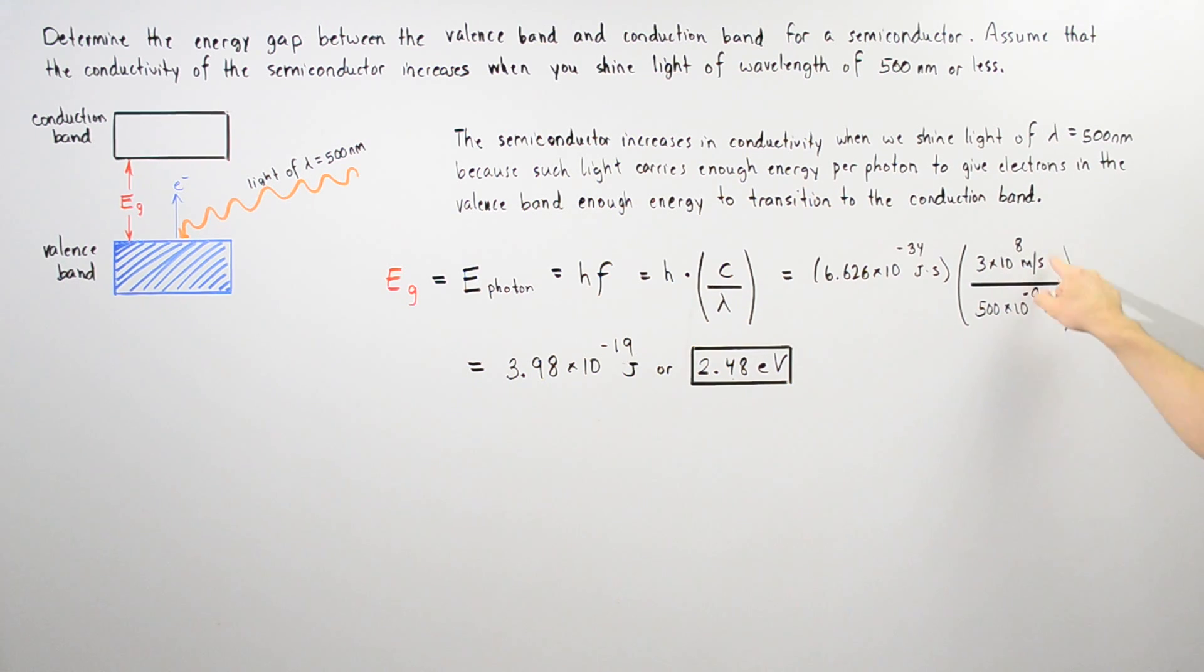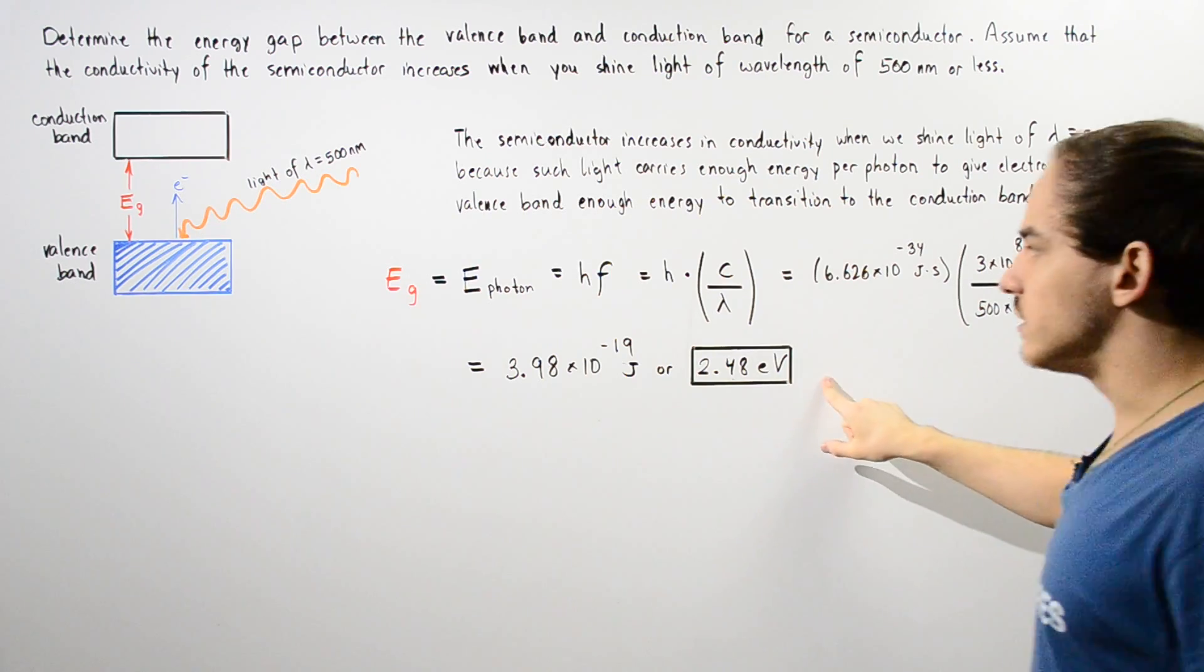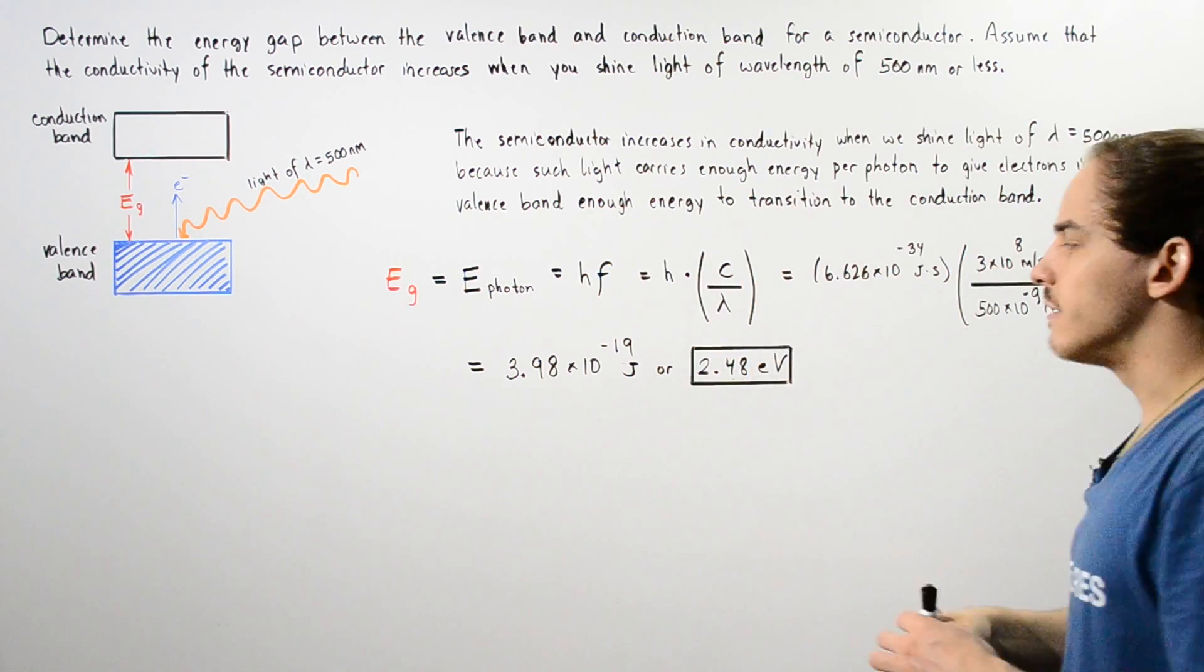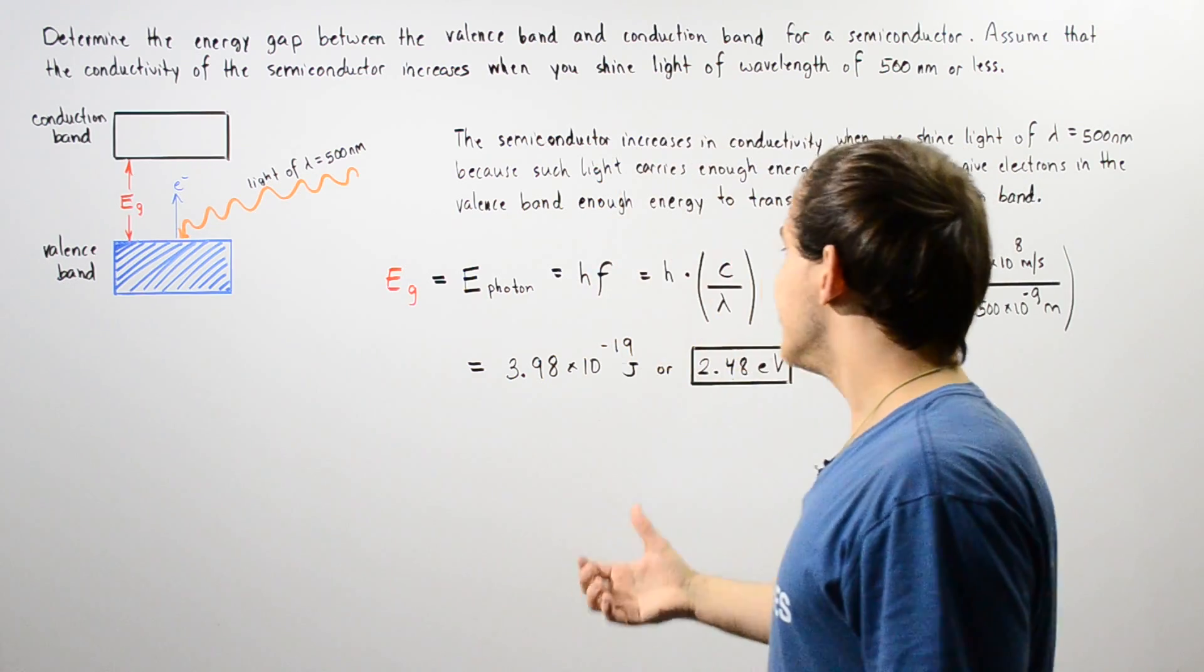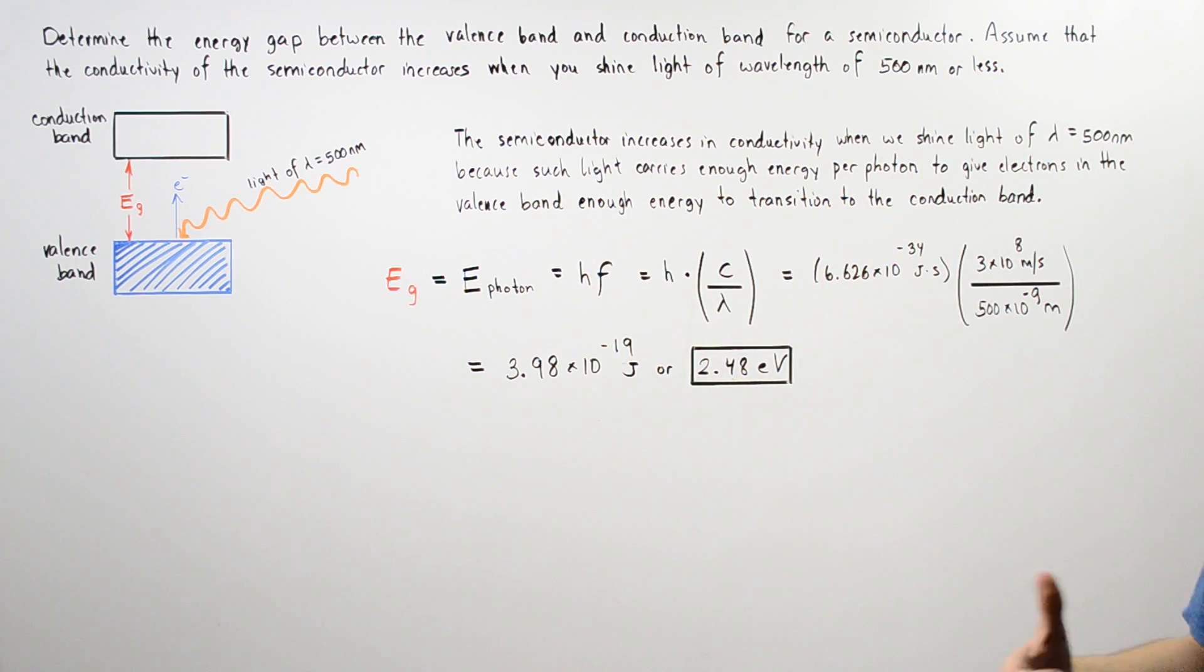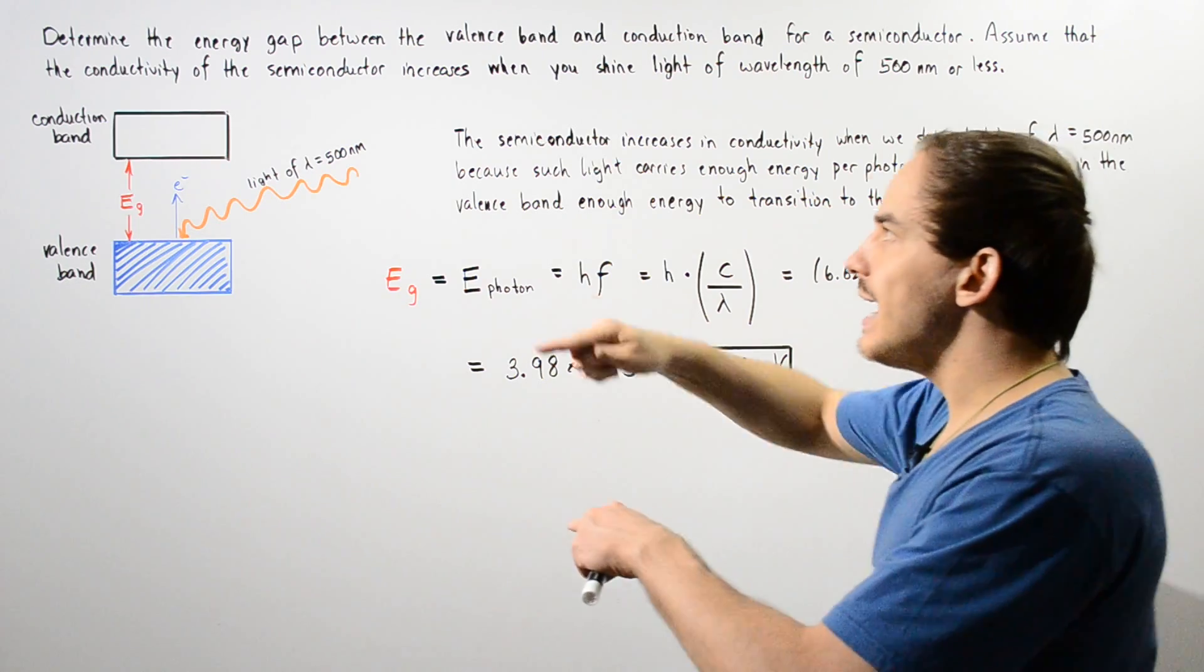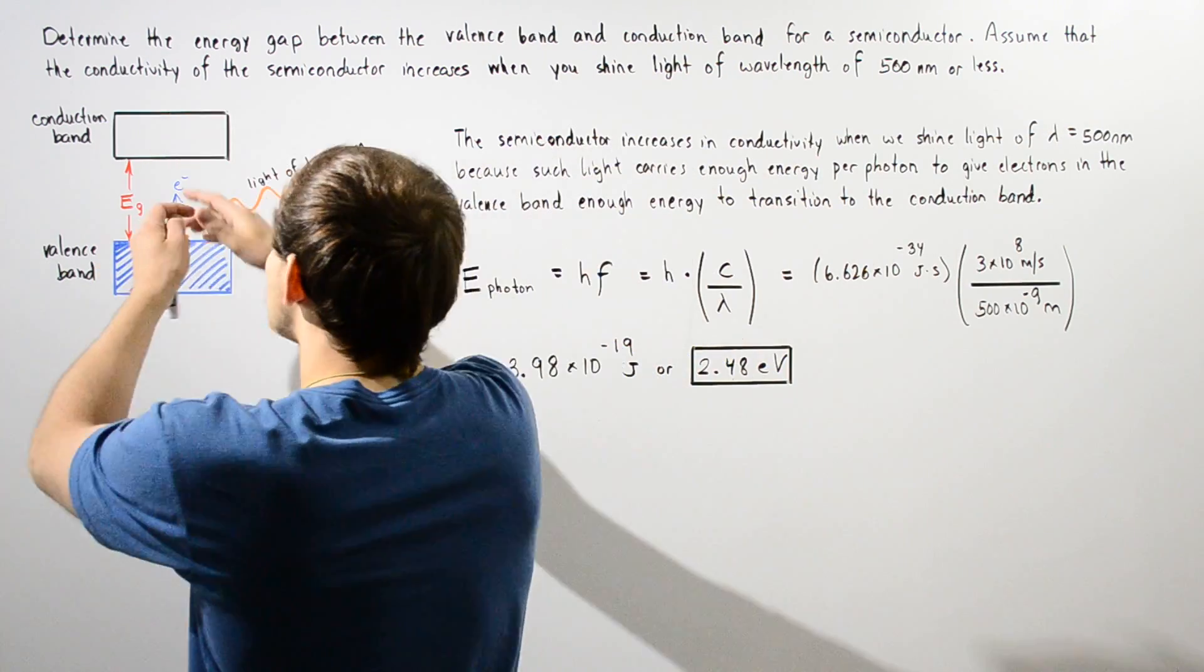So notice our meters cancel and our seconds cancel as well. And we are left with the following amount of energy. So 3.98 times 10 to the negative 19 joules or equivalently 2.48 electron volts is the energy difference known as the energy gap between the conduction band and the valence band of this particular semiconductor.